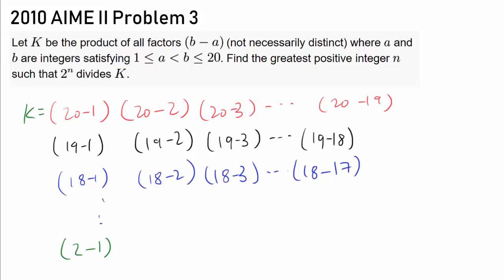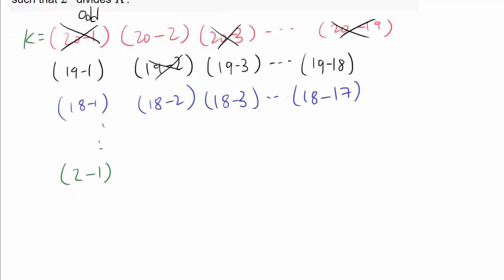So how do we find it? Well, first of all, we don't care about 20 minus 1, 20 minus 3, 20 minus 19, 19 minus 2 — we don't care about these factors because they are odd. The odd factors are not going to contribute any 2s to the prime factorization of k, so we can safely ignore those.